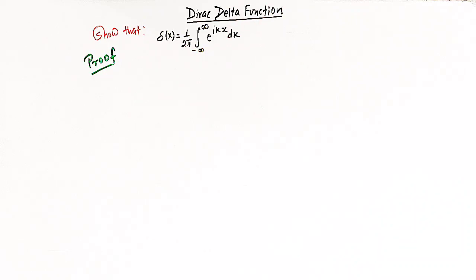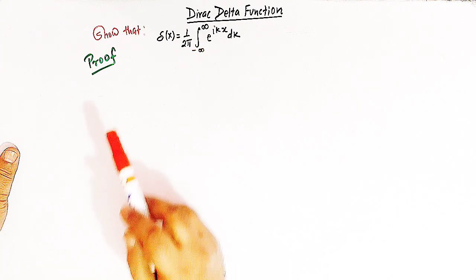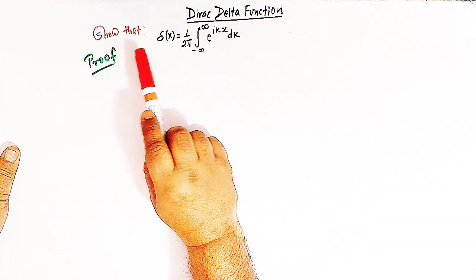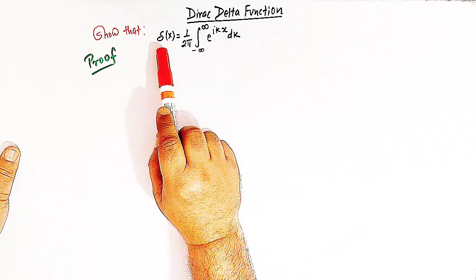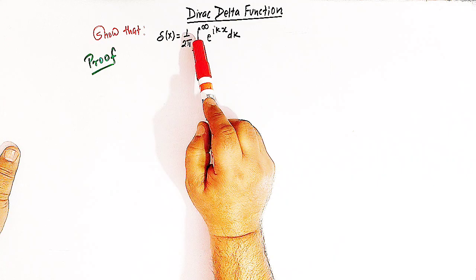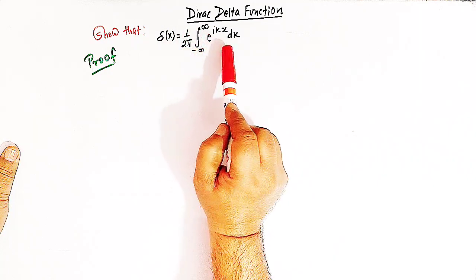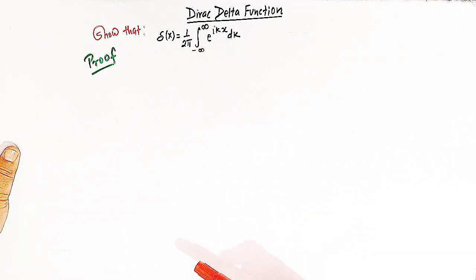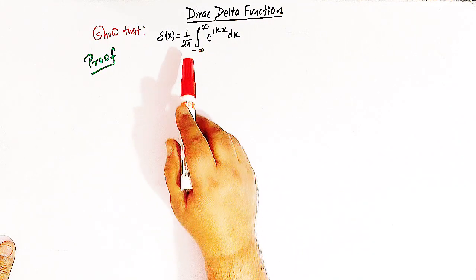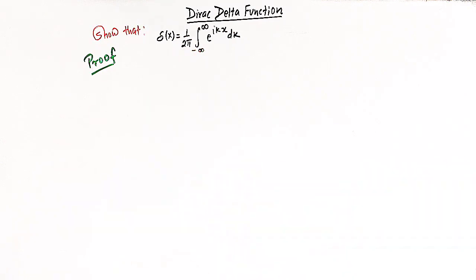Hello viewers. In today's session we are going to discuss an important representation of the direct delta function. In this class we'll discuss the representation: delta of x is equal to 1 over 2 pi, times the integral from minus infinity to infinity of e raised to ikx dk. We'll prove this expression with the help of the concept of Fourier transform and the inverse Fourier transform.